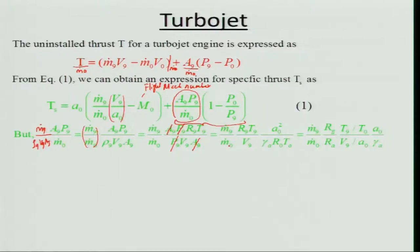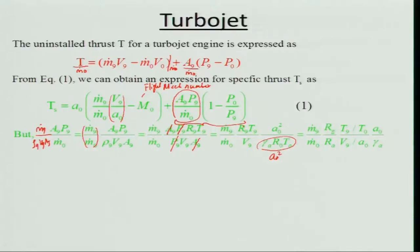Multiplying numerator and denominator by a_0² (the free-stream speed of sound squared, which equals γ_A R_A T_0), we express the term using R_9 = R_G (gas constant for combustion products at higher temperature) and R_A for air. T_9/T_0 appears, and V_9/a_0 is similar to the momentum thrust expression. We will use γ_A = 1.4.